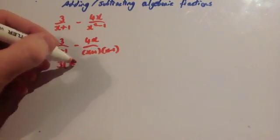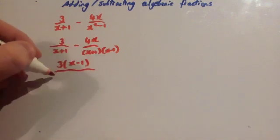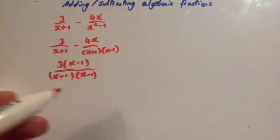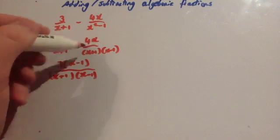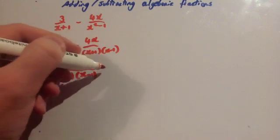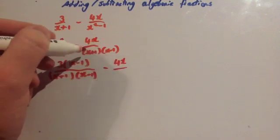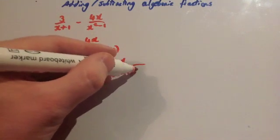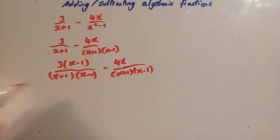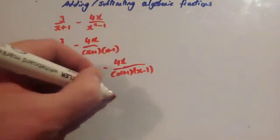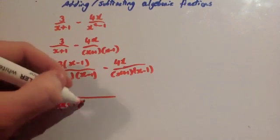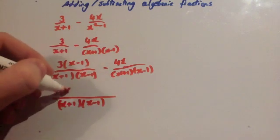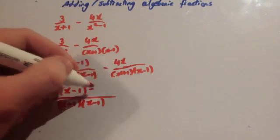Times the top and bottom of this fraction by (x minus 1) — so they've both got (x minus 1) on the bottom. You're going to get 3(x minus 1) over (x plus 1)(x minus 1). I'm just leaving it as it is. And this one, you don't need to do anything to it because it's already got (x plus 1)(x minus 1) on the denominator, so it stays as 4x over (x plus 1)(x minus 1). Because we've got the same denominator now, put it all over (x plus 1)(x minus 1), and write on the top line 3(x minus 1) minus 4x.